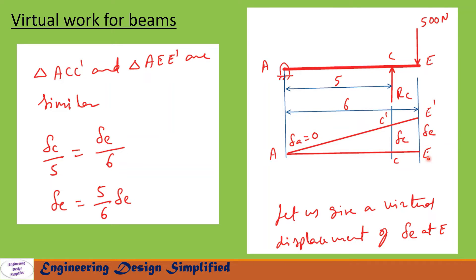From these two similar triangles ACCprime and AEEprime, we can write delta C by 5 equal to delta E by 6. The displacement delta C corresponds to distance A to C of 5 meters, and the displacement delta E corresponds to distance A to E of 6 meters. So delta C equals 5 by 6 into delta E.